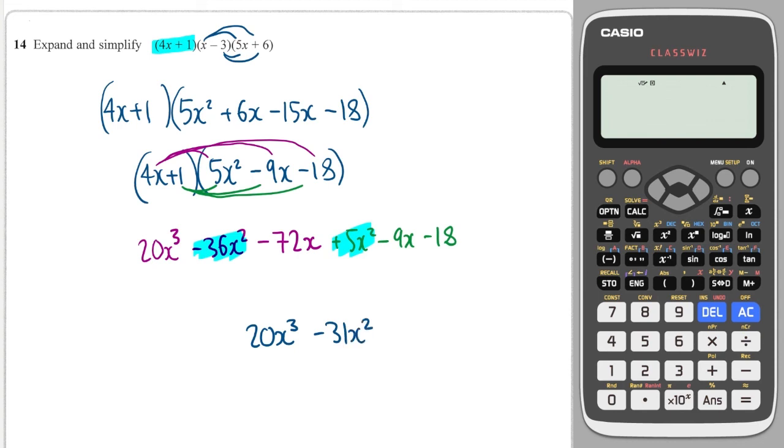And the x's, we've got minus 72 and minus 9, which gives you minus 81x. And then finally, minus 18.